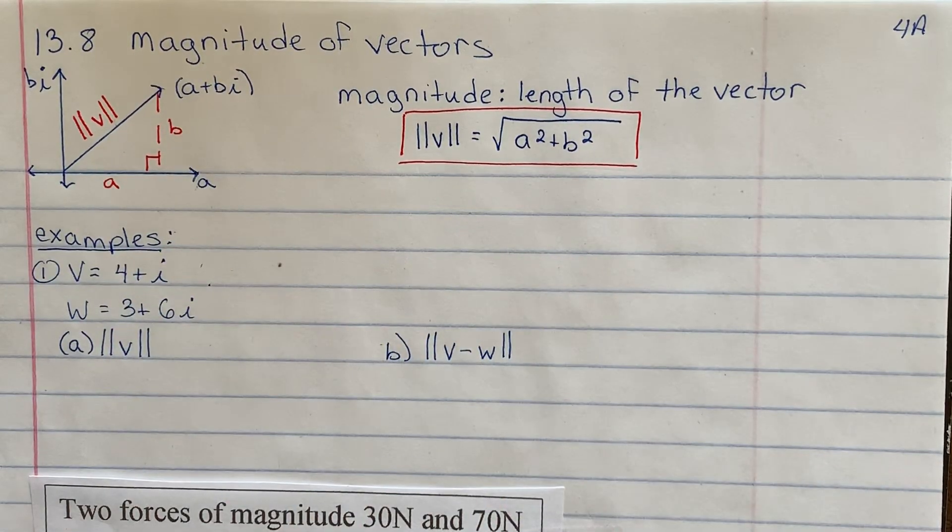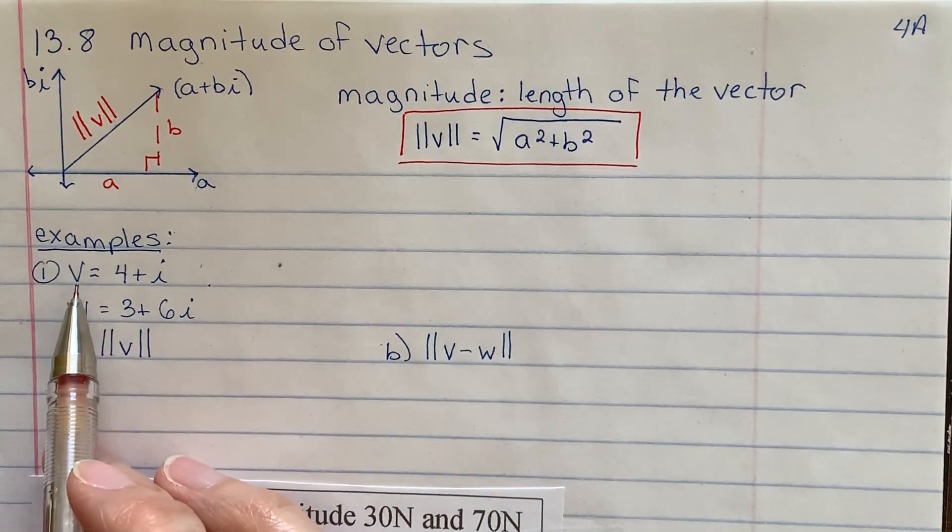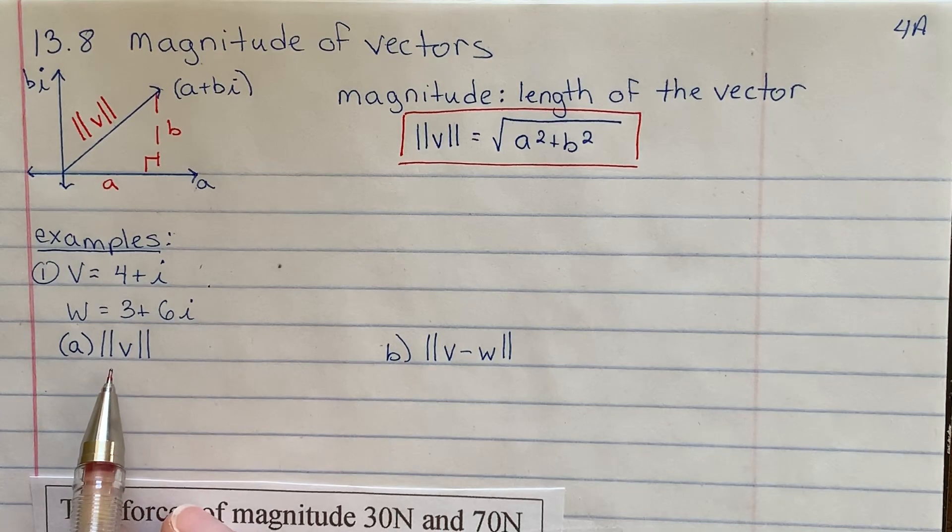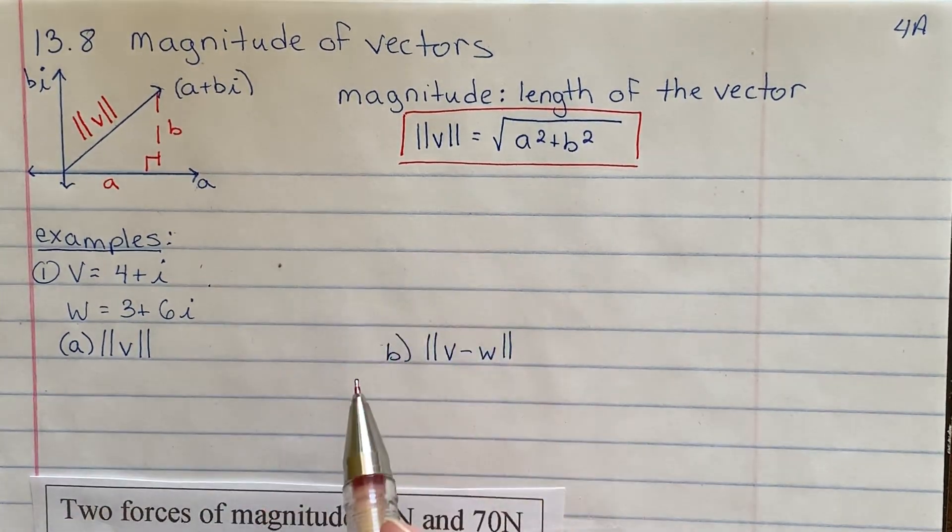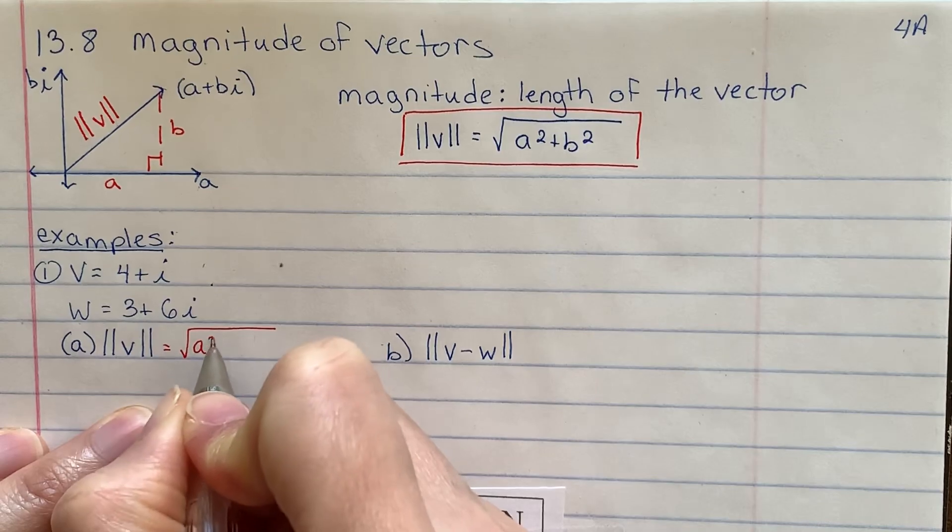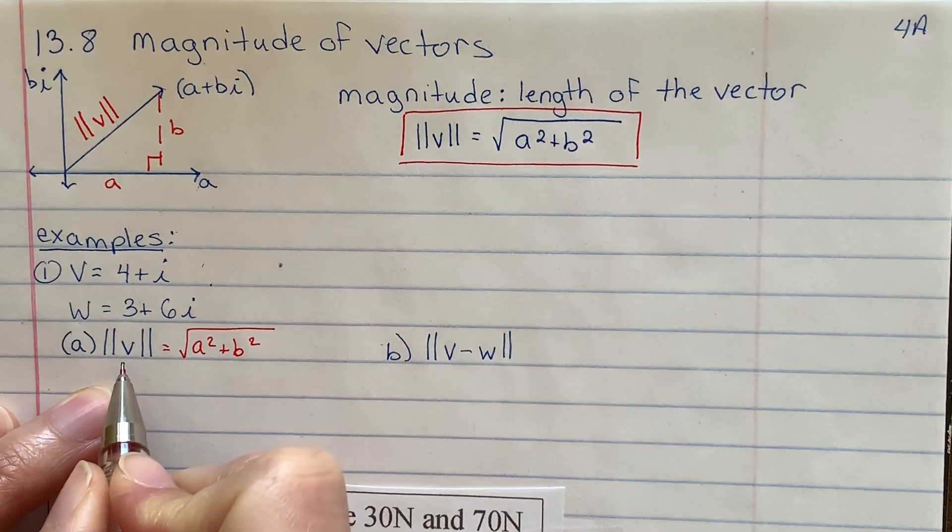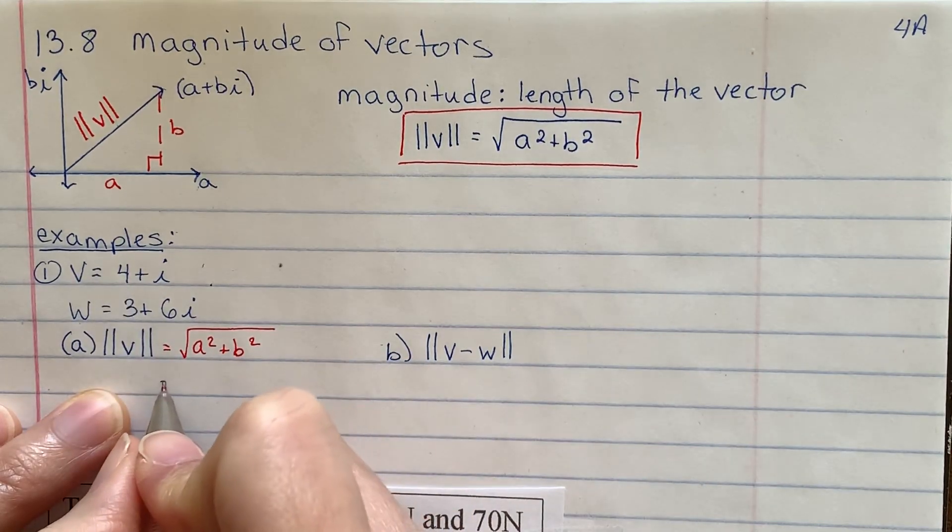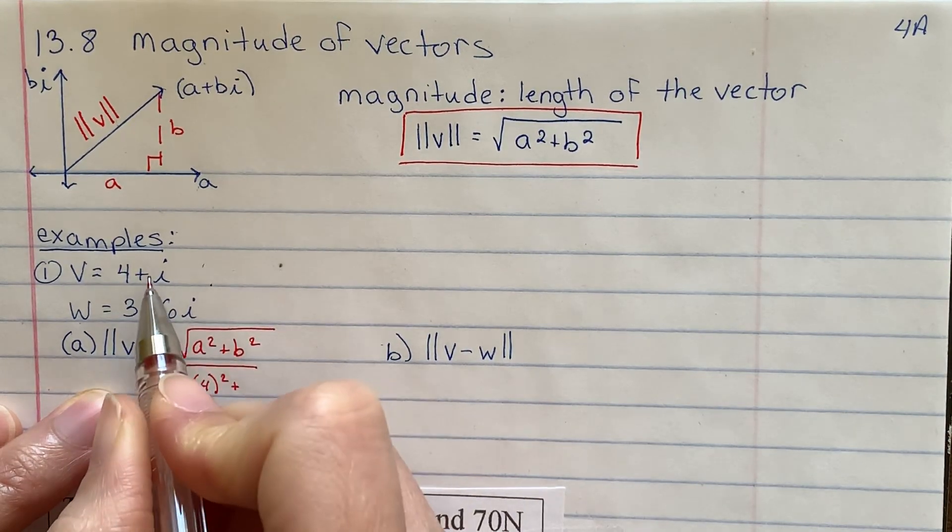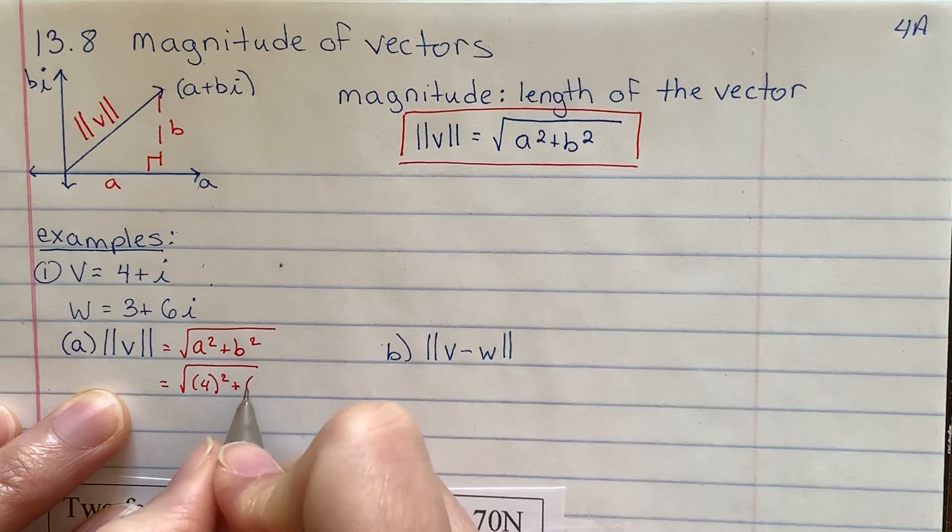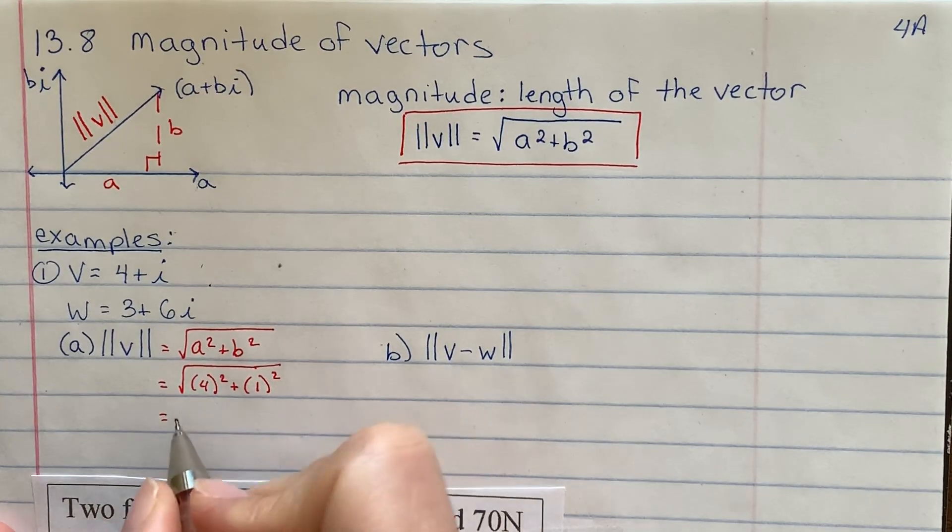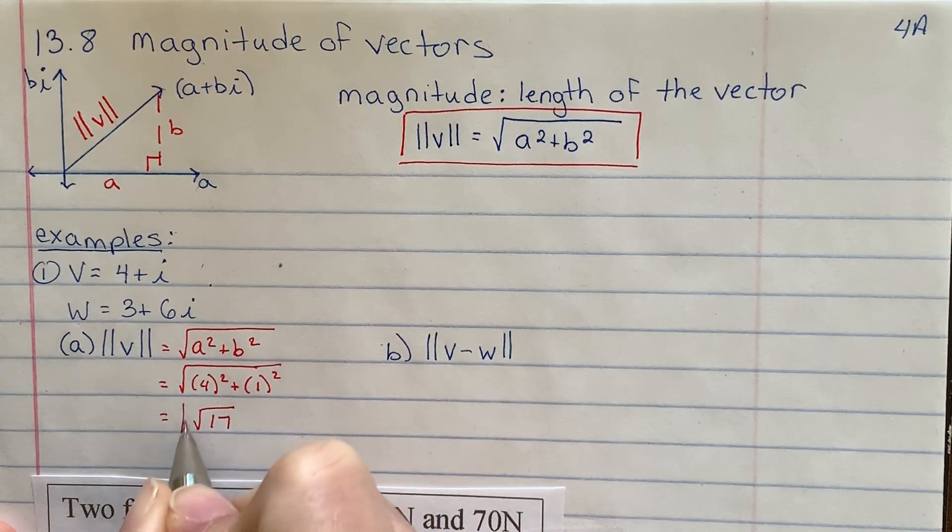So let's go to my first example here. My first example gives you two vectors. Vector V is the coordinate 4 plus i, and vector W is 3 plus 6i. Part A says find the magnitude of V. Now I know what the formula is. I'm just going to start by writing the formula down: the square root of A squared plus B squared. I'm looking for vector V, that's this top vector. I'm going to plug in what I know. I know the number A is going to be 4, and B, this is 1 in front of the i, so B is the number 1. 4 squared is 16, 16 plus 1 is 17. This is just the square root of 17.